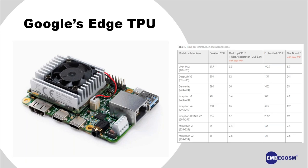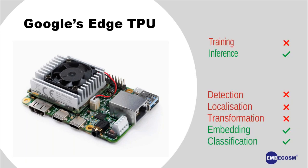We have taken this Edge TPU hardware and tried to implement a face detection pipeline on it, but we are somewhat limited in what we can do. One thing we can't do is train our neural network on the TPU — we have to train off the TPU and then bring the trained model onto it. Training is frankly difficult and this small piece of hardware doesn't support it well. In terms of our facial recognition pipeline, at the moment we are only doing two of the possible five steps on the TPU.